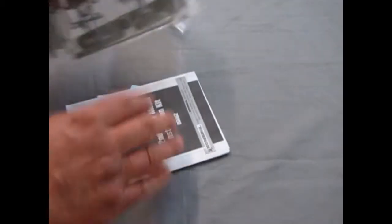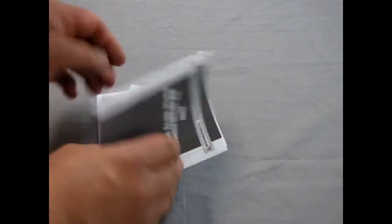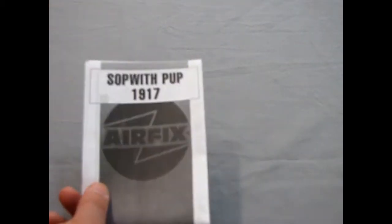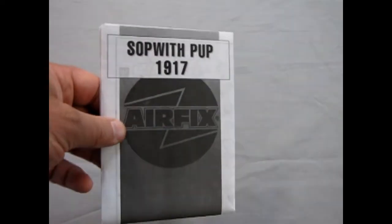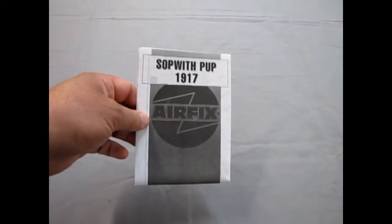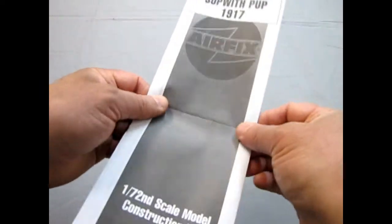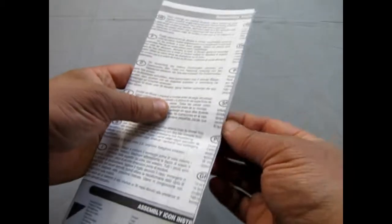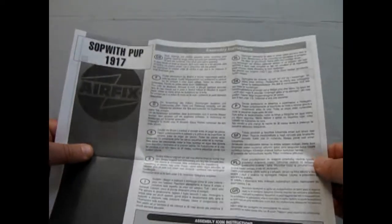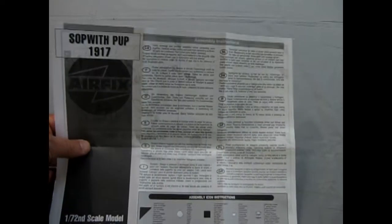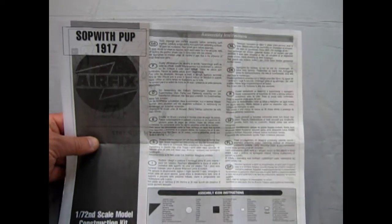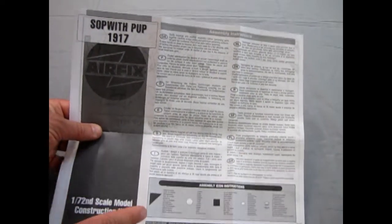Okay so we will move the parts out of the way and start off with our instruction sheet and here is the Sopwith Pup from 1917. And these instructions are a little more modern by just a touch. It includes directions in all the languages of Europe.